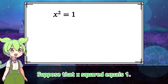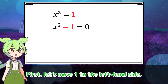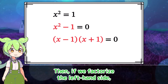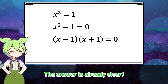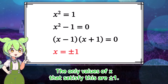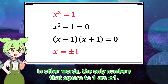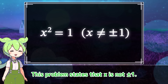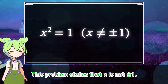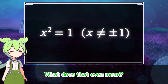Suppose that x squared equals 1. First, let's move 1 to the left-hand side. If we factorize the left-hand side, the answer is already clear. The only values of x that satisfy this are plus or minus 1. In other words, the only numbers that square to 1 are plus or minus 1. But this problem states that x is not plus or minus 1. What does that even mean?